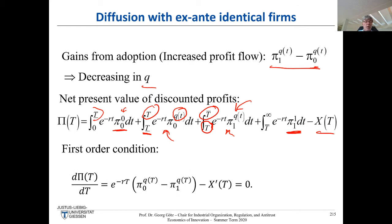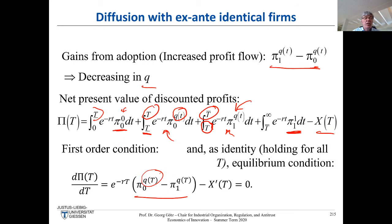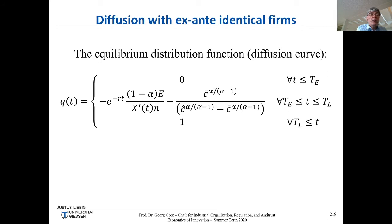You get a first-order condition that is now very simple — a one-liner. My optimal adoption date depends on the share Q(T). Importantly, this condition must hold for all T in the diffusion interval: if there were a time where it failed, I'd have an incentive to deviate. Solving this for Q(T) gives the equilibrium distribution function — the diffusion curve.